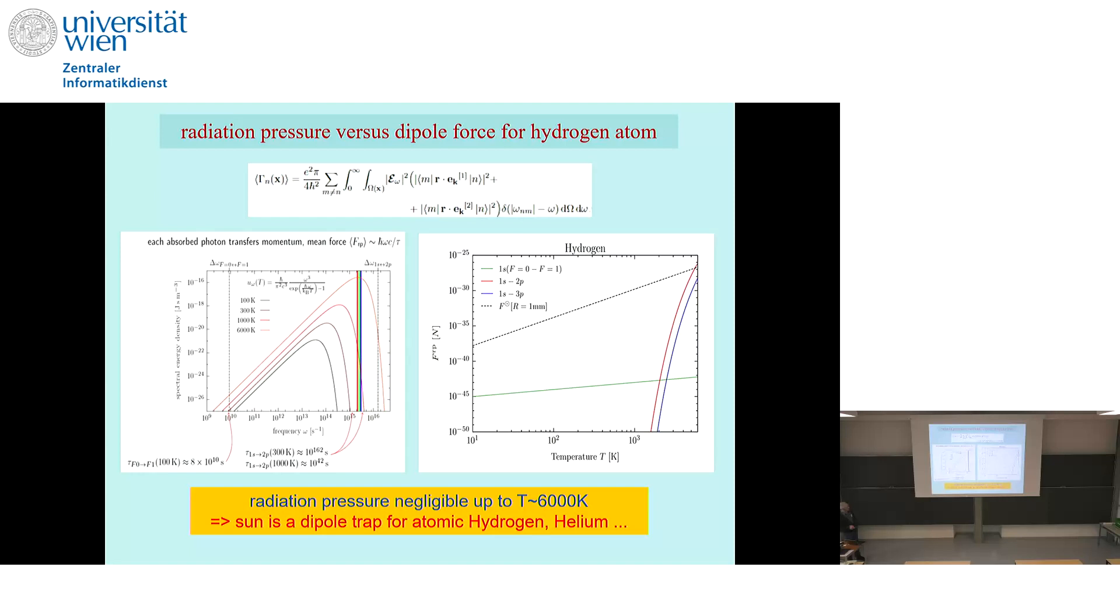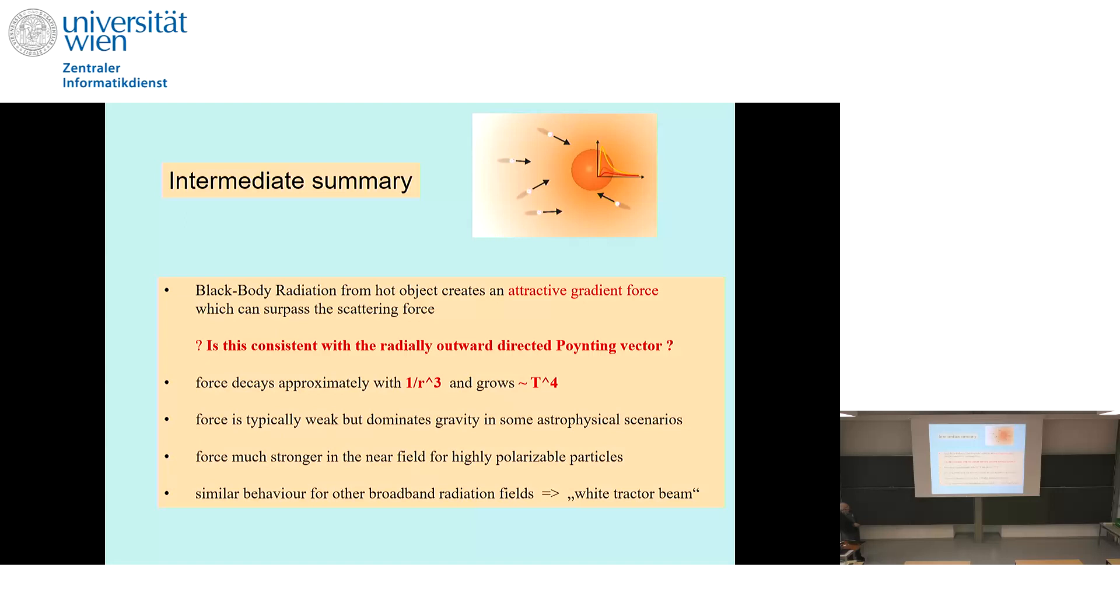It's actually quite interesting that if we look at these contributions of the radiation pressure compared to this black body force, they roughly meet at the temperature of the sun. The sun is still, from the point of view of radiation, a dipole trap for atomic hydrogen and helium. Whereas usually it's assumed that the radiation would push away this. Gravity is many orders of magnitude bigger. But it's one over acute potentials, so the Kepler ellipses become, in principle, spirals.